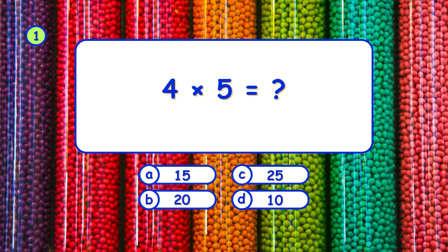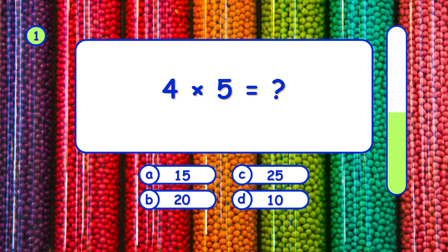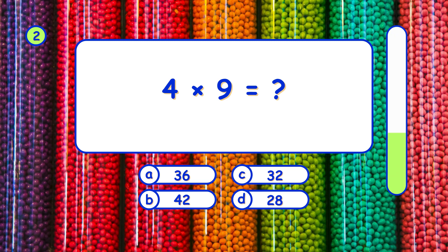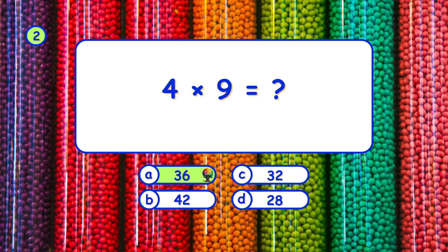What is 4 times 5? It's B, 20. What is 4 times 9? It's A, 36.